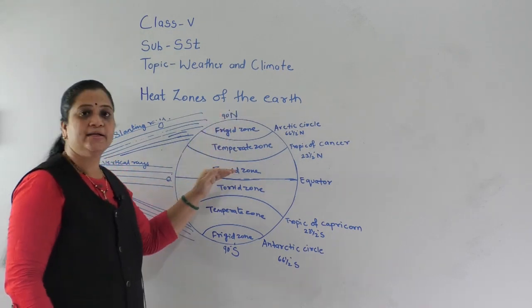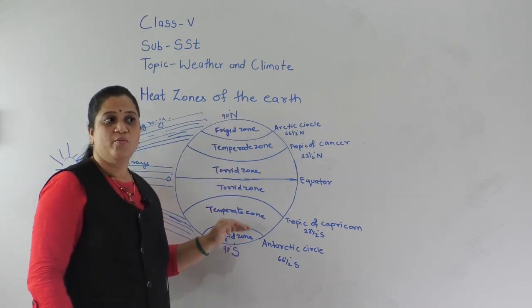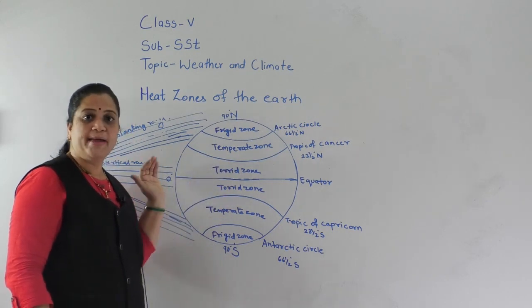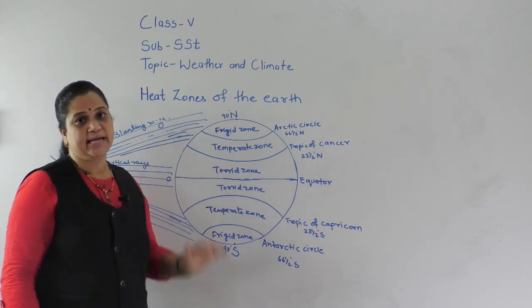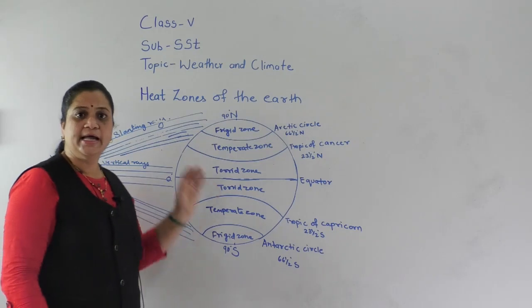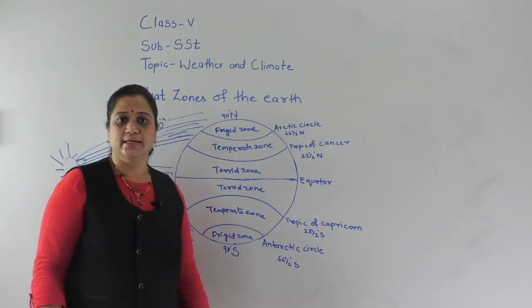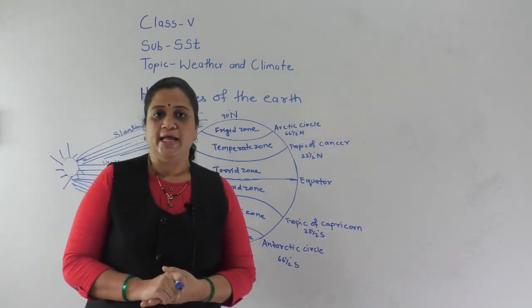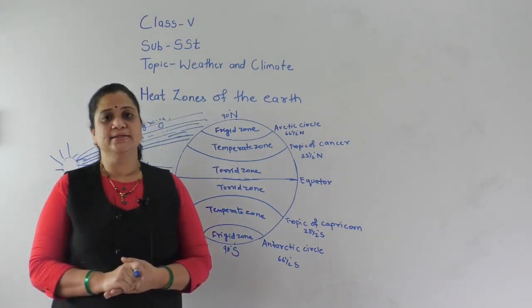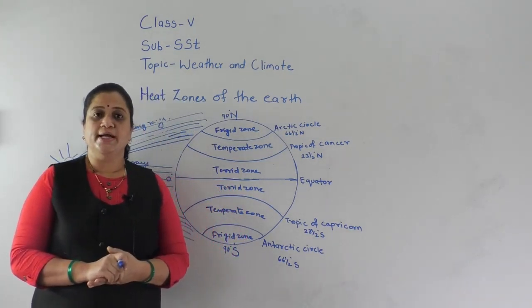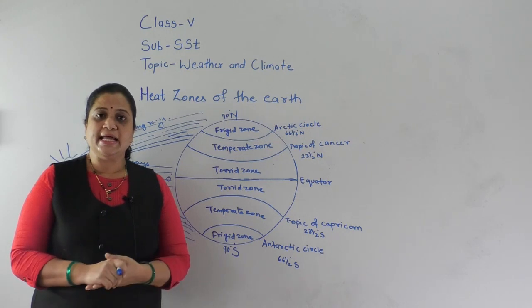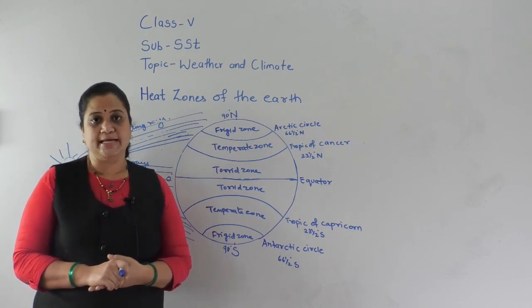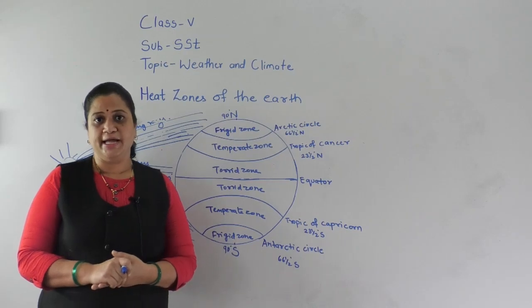So these are the three heat zones — Torrid, Temperate, and Frigid — based on the intensity of the heat received by the Earth's surface. Today we have completed the lesson. Children, read the lesson thoroughly and try to understand the concepts more clearly. Thank you.